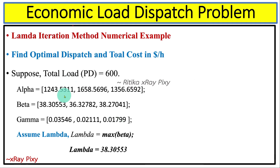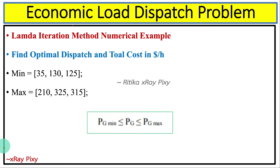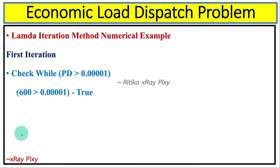Our aim here is to find the optimal dispatch and total fuel cost. Suppose total load is 600 MW, and we have values for alpha, beta, and gamma for three units as shown. We assume the initial value of lambda to be the maximum value in beta, which is 38.30553. We also have inequality constraints with minimum and maximum power values for each unit that must be satisfied.